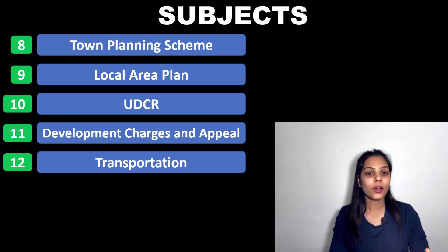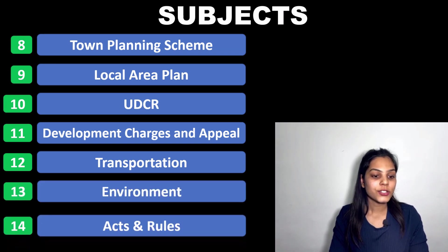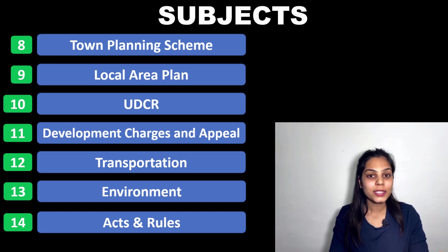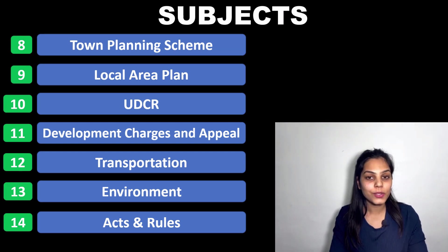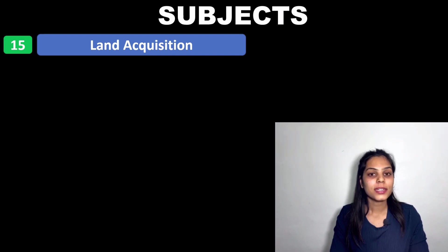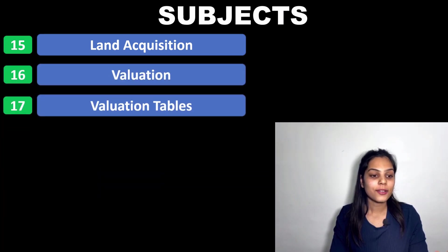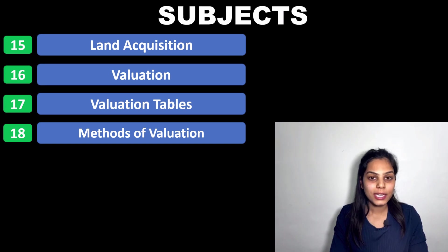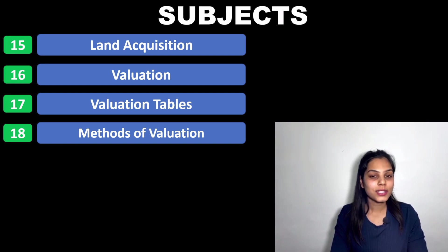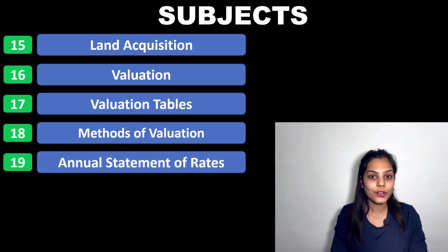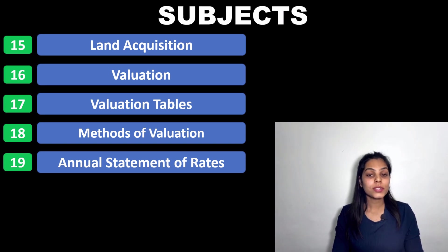Transportation is a subject already studied by you as it is from the civil syllabus, so you will find it easy. The next section is environment — you have to study this subject very properly because it will also benefit you in the next exam, that is the MPSC general exam, as the same syllabus is included there too. The next is acts and rules, then land acquisition, which is also a theoretical one. Sixteenth, seventeenth, and eighteenth cover valuation, valuation tables, and methods of valuation — essentially the valuation chapter you have already studied in your civil syllabus.